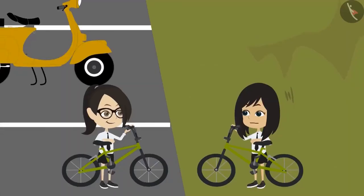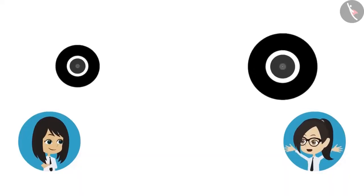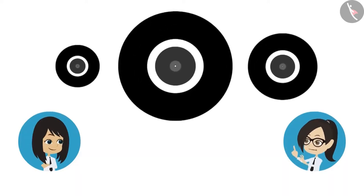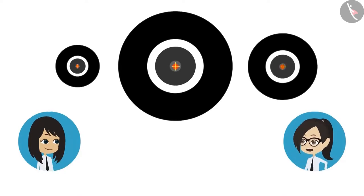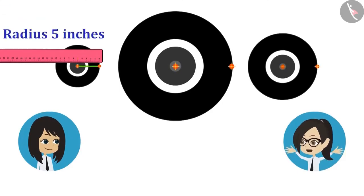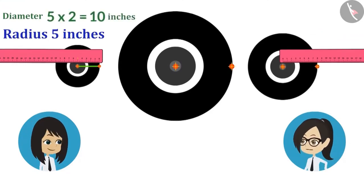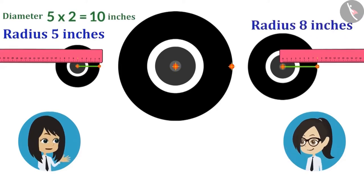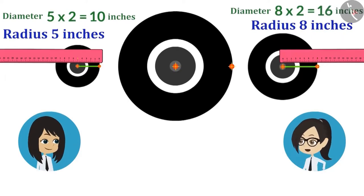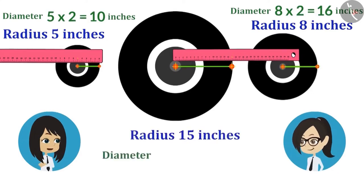Now they measure the remaining wheels. The scooter wheel has a radius of 5 inches, so its diameter is 10 inches. The front wheel of the tractor has a radius of 8 inches, giving a diameter of 16 inches. The largest wheel — the rear wheel of the tractor — has a radius of 15 inches, meaning its diameter is 30 inches.